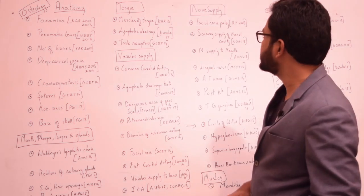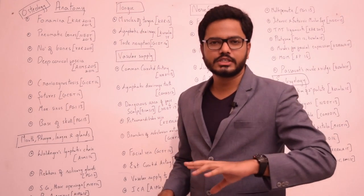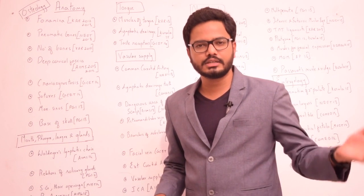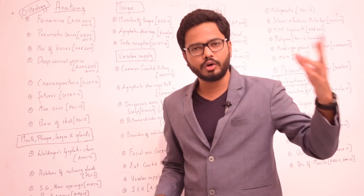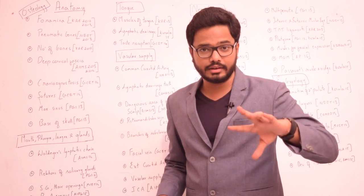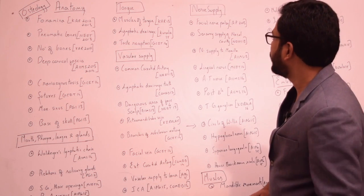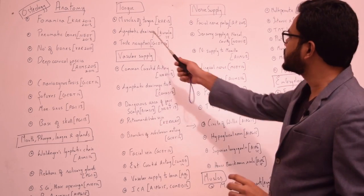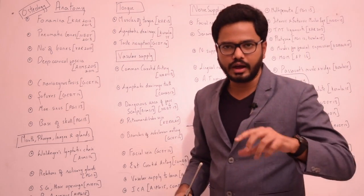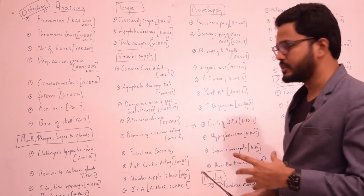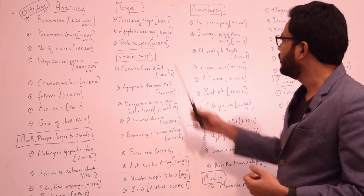We also have questions on the tongue — muscles of the tongue, various extrinsic and intrinsic muscles, their origin, their nerve supply and exceptions. And also questions from the lymphatic drainage of the tongue, various parts of the tongue: tip of tongue, body of tongue, and base of tongue.